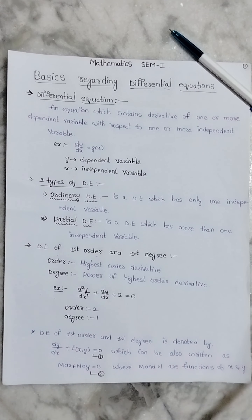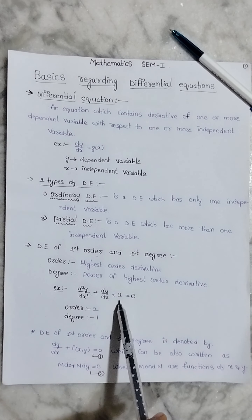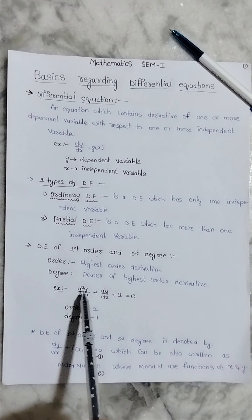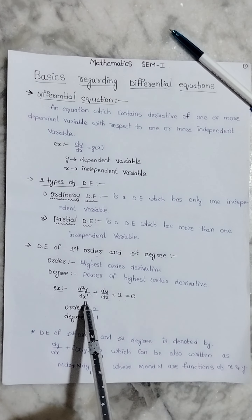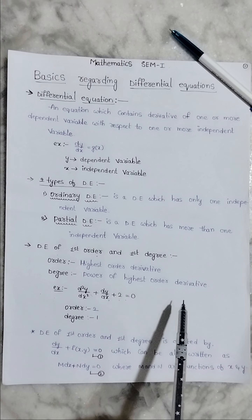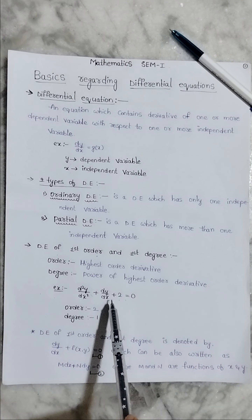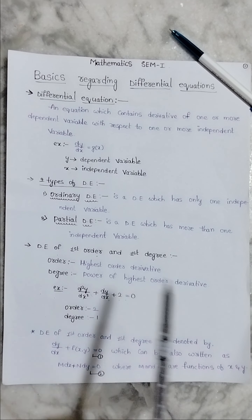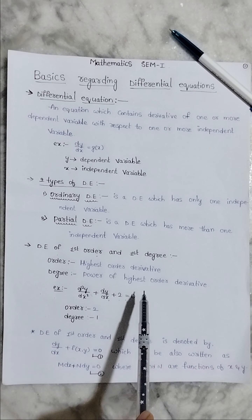For example, d squared y by dx squared — this is a higher order derivative.